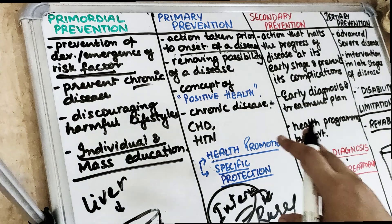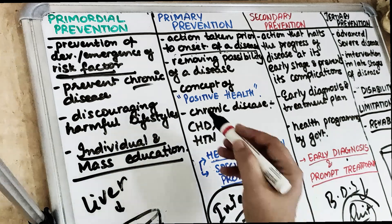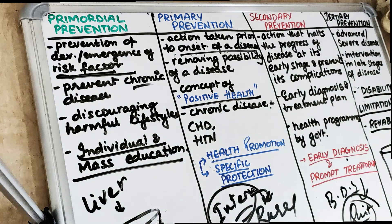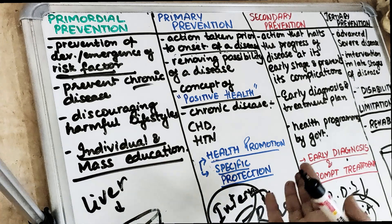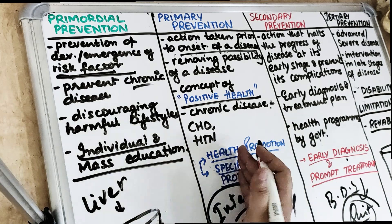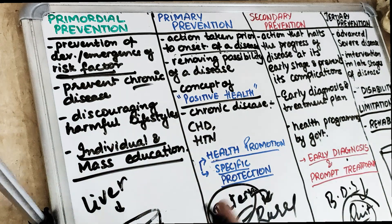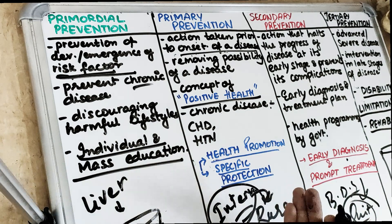The concept of primary prevention includes the concept of positive health — developing good habits. The concept of primary prevention is now applied in the prevention of chronic diseases such as coronary heart disease, hypertension, and cancer. These are based on eliminating or modifying the risk factors of the disease.